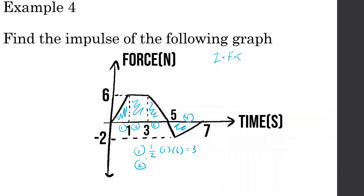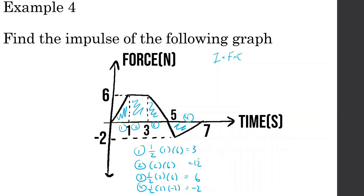Area 2 is just a rectangle, so it's going to be base times height: base is 2, height is 6, giving us 12. Area 3 is going to be one-half base times height, so from 3 to 5 that's a base of 2, height is 6, giving us 6. And area 4 is equal to one-half base, which is 2, times height, which is negative 2, giving us negative 2. Adding all this up: 3 plus 12 plus 6 minus 2 equals 19.